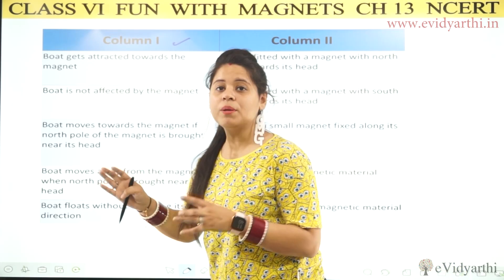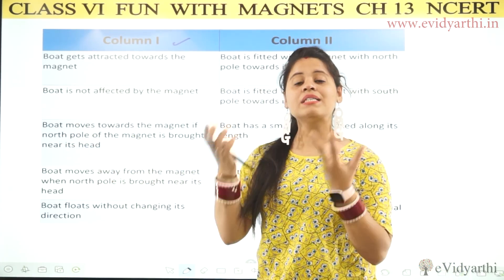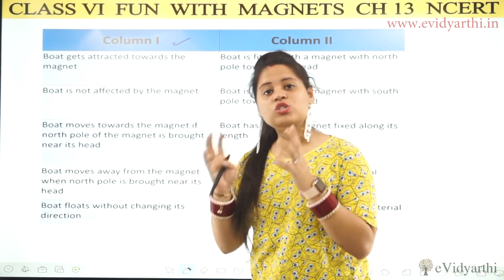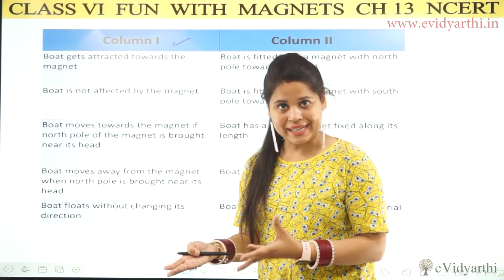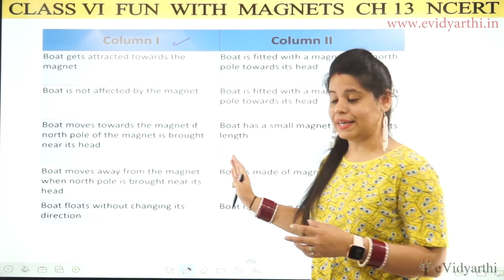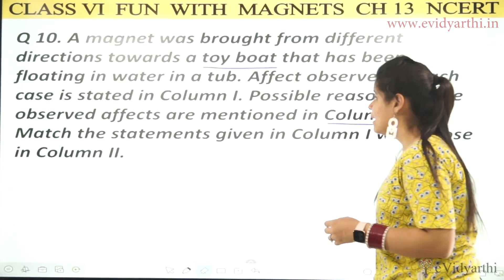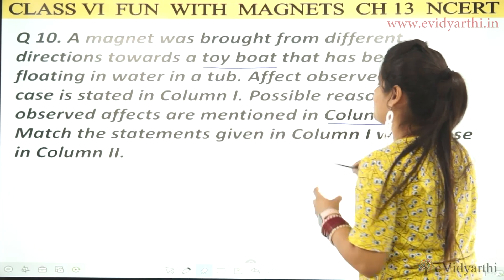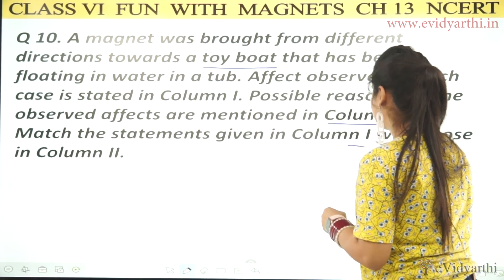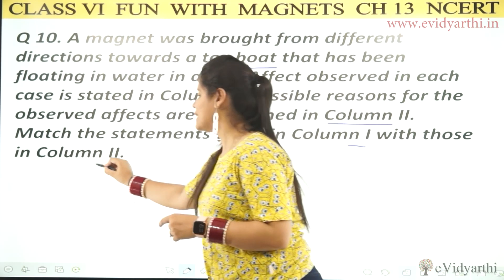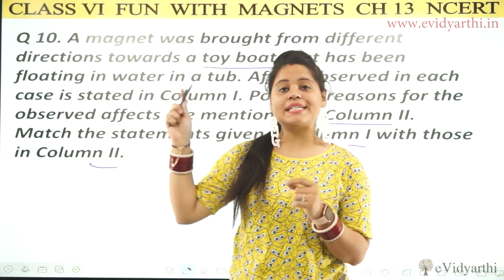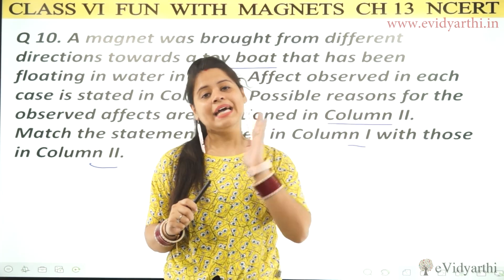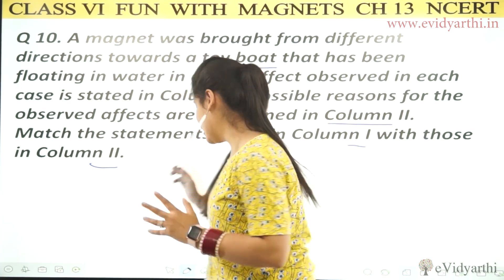For example, if the boat is attracted to the magnet, that means the boat is made of iron or some magnetic material. We need to match the statements given in column 1 with those in column 2 — find the reason in column 2 for each effect in column 1 and mark it.